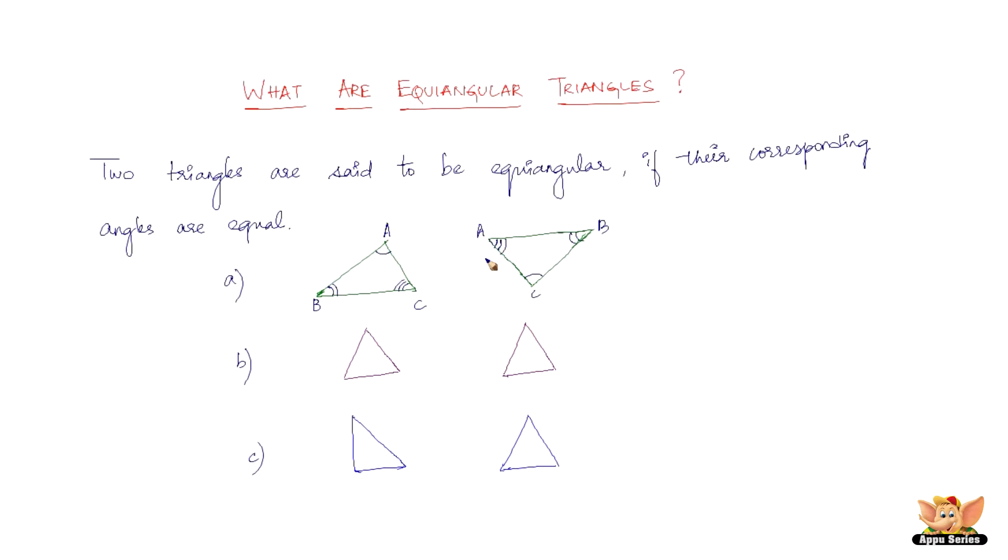These two triangles are definitely equiangular because angle A equals angle A, angle B equals angle B, and angle C equals angle C. All three angles of this triangle equal all three angles of that triangle as well. It doesn't matter that one is slightly inverted—as long as the three angles are the same, the triangles are exactly equiangular.